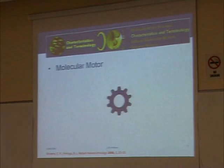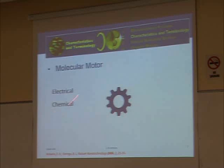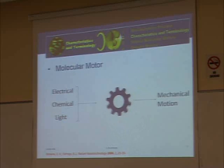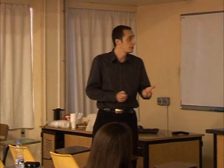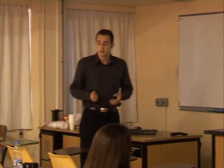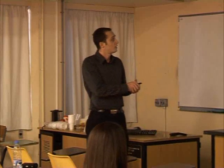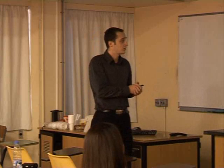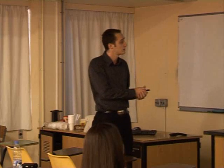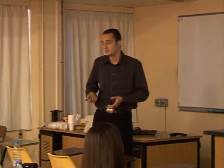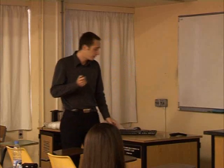What is a molecular motor? Simply, a molecular motor converts electrical, chemical, and light energy into mechanical motion. Its characteristics include: the type of energy input — it could be electrical, light, or chemical; the motion of the components, whether rotary or linear; the operation monitoring; the possibility to repeat the process — is it cyclic or not cyclic? Can the motor keep on repeating its process? And the time scale to complete a cycle, meaning the frequency of the repetition of the cycle.